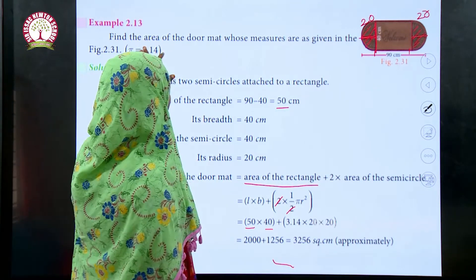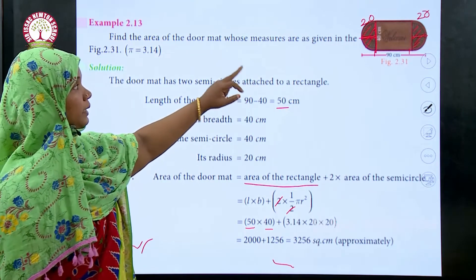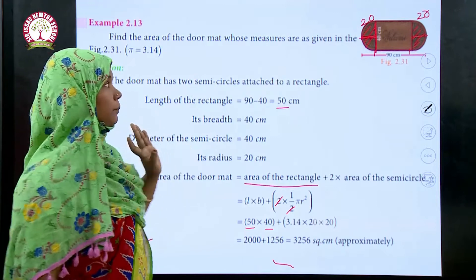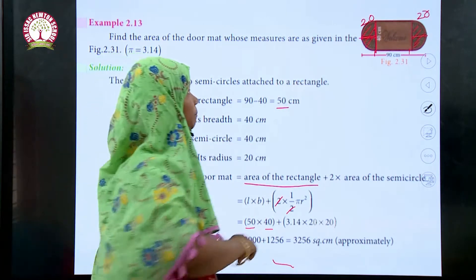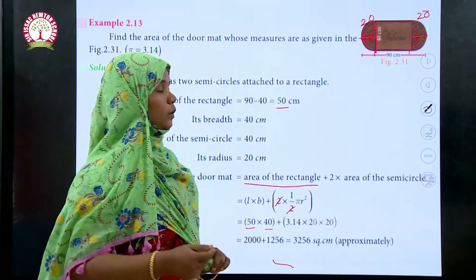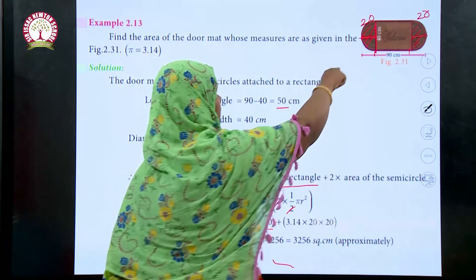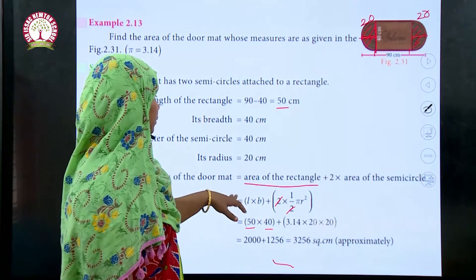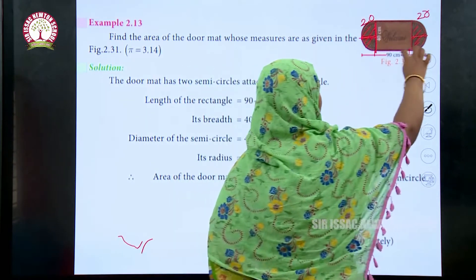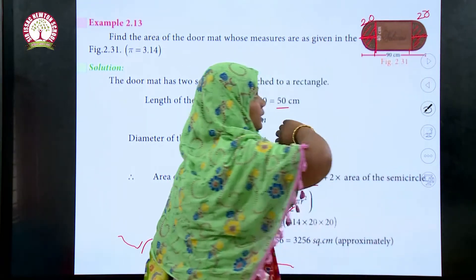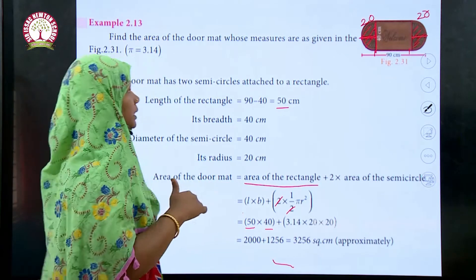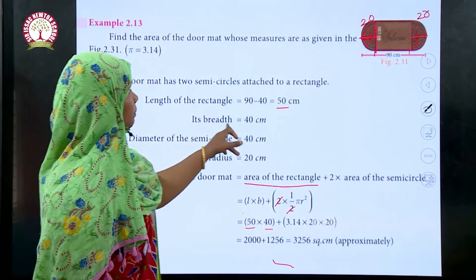To summarize: the doormat has a rectangle in between and two semicircles attached. The total length is 90 centimeters and the breadth of the rectangle is 40 centimeters. Since the breadth equals the diameter of the semicircle, the radius is 40 divided by 2, which is 20 centimeters. The rectangle's length is 90 minus 20 minus 20, giving 50 centimeters, and the breadth is 40 centimeters.